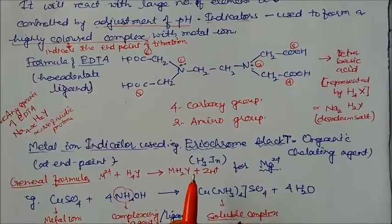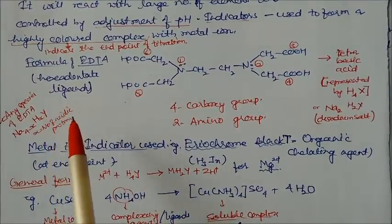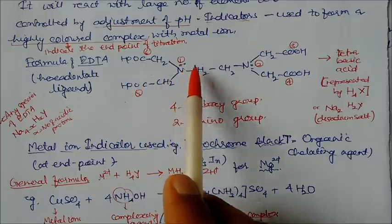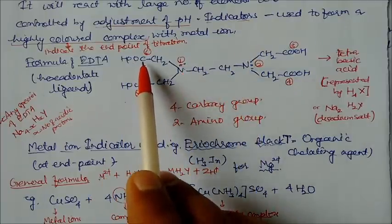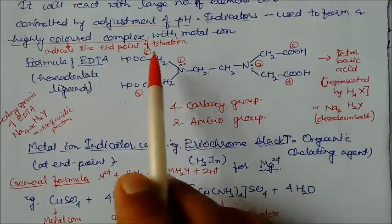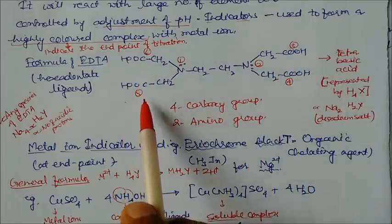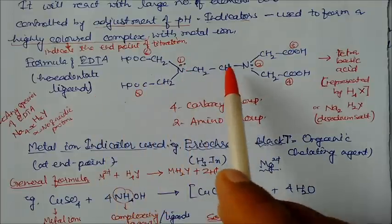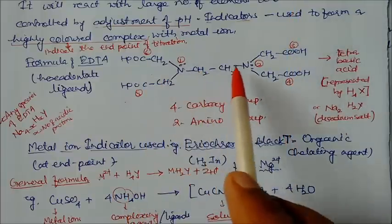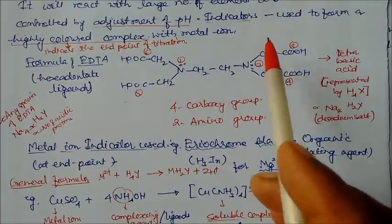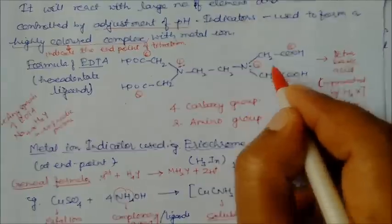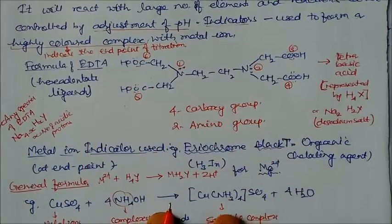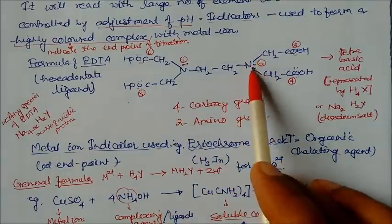EDTA is called a hexadentate ligand. Ligands are substances which can donate a lone pair of electrons - that is, non-bonding electrons. There are six positions that can donate lone pairs: four from carboxylic acid groups and two from amino groups. That is why EDTA is also called a tetrabasic acid.